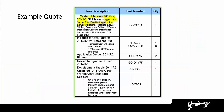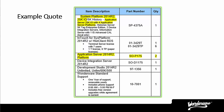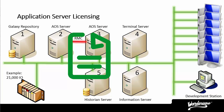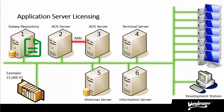If we look at the quote again, you will see that the base Application Server only comes with four platforms. So for our system to be licensed correctly, we need to add two more platforms. That is what the additional highlighted line is for — it adds two more platforms to get us to the required six. The Application Server license is always installed on the Galaxy Repository computer. The Application Server license does not have to be installed on any other computer — this is a common mistake that most customers make.